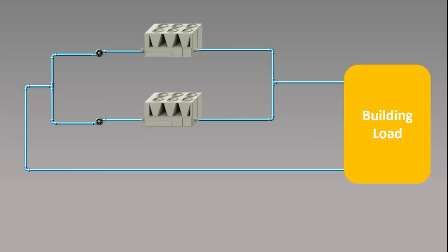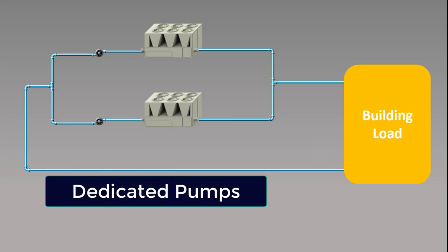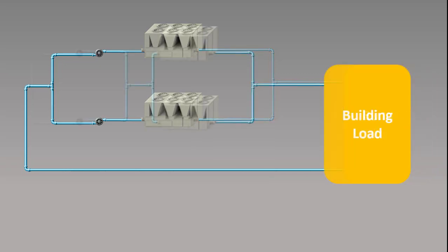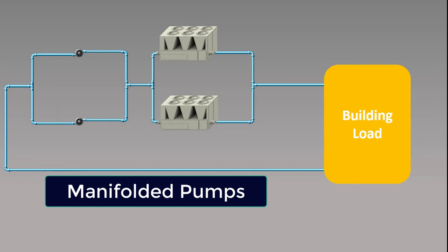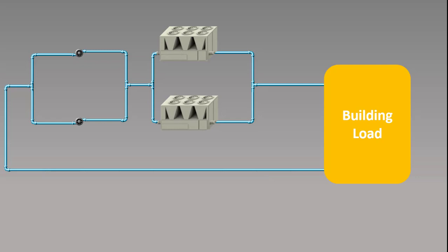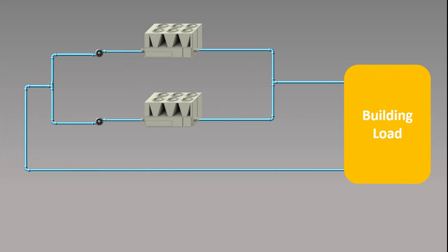A constant speed primary chilled water system is shown with dedicated pumps, where a pump is dedicated for each chiller. The other configuration can be manifolded or header type — both can be used based on design preference and each has its pros and cons. For our discussion, we will consider the dedicated primary chilled water system configuration. Now let's have a look at the different components of this system for its control and monitoring from the BMS.